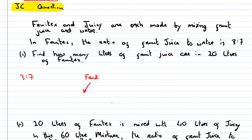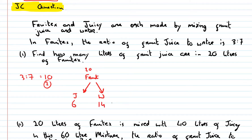Well, here's our Frutex, divided into juice and water, and there's 20 litres of it. I want to split up that 20 litres into the ratio 3 to 7. I add the two together and get 10. I divide 20 by 10 and get 2. I multiply 2 by 3 and get 6, and 2 by 7 and get 14. To check: 6 plus 14 gives back 20. The question asks how many litres of fruit juice are in Frutex — there are 6 litres.